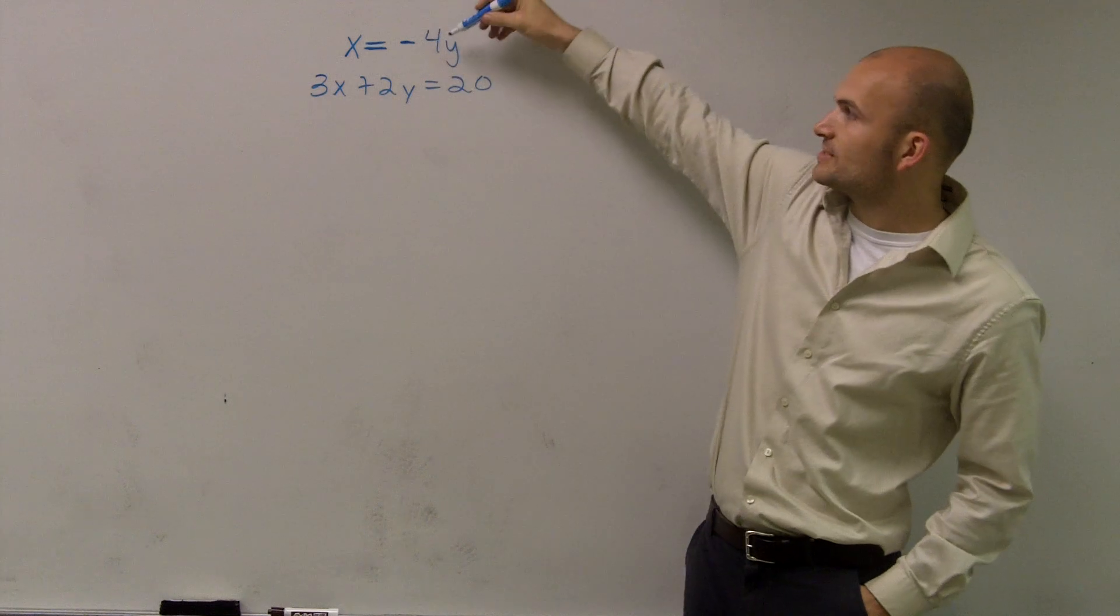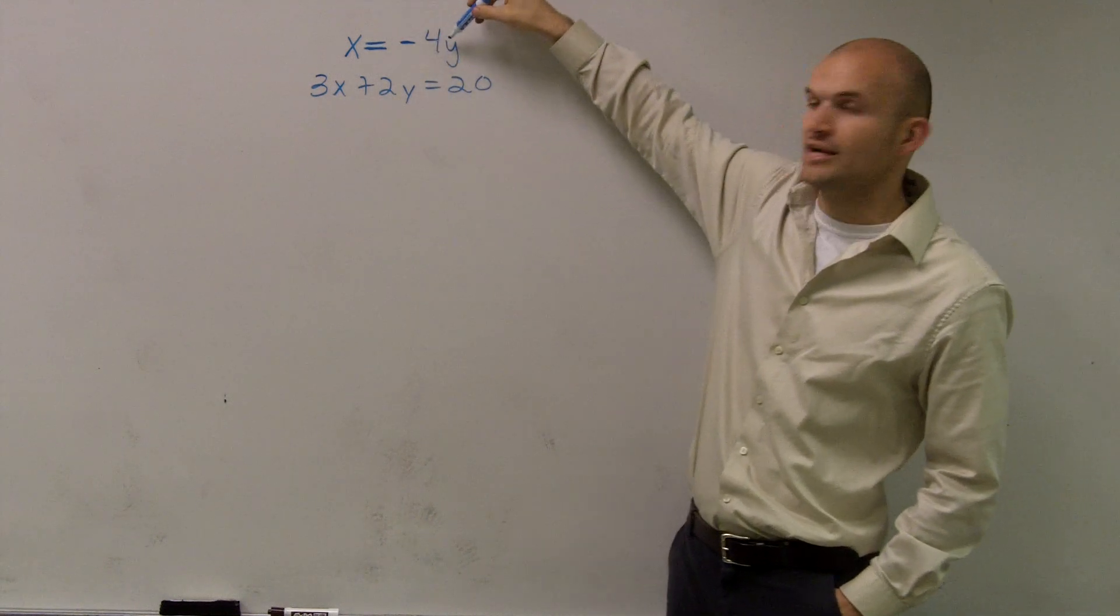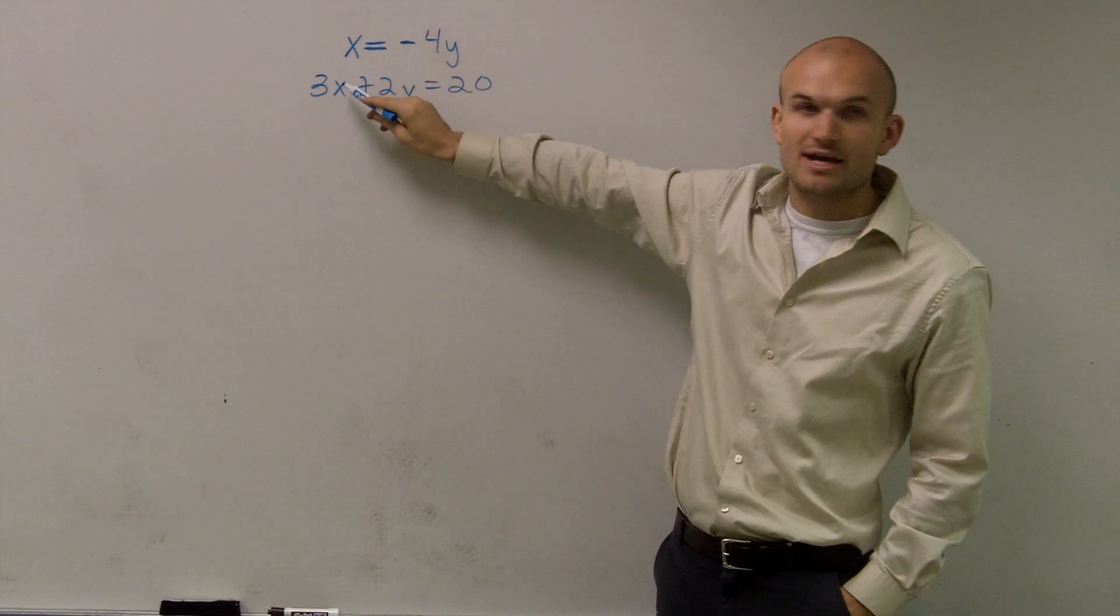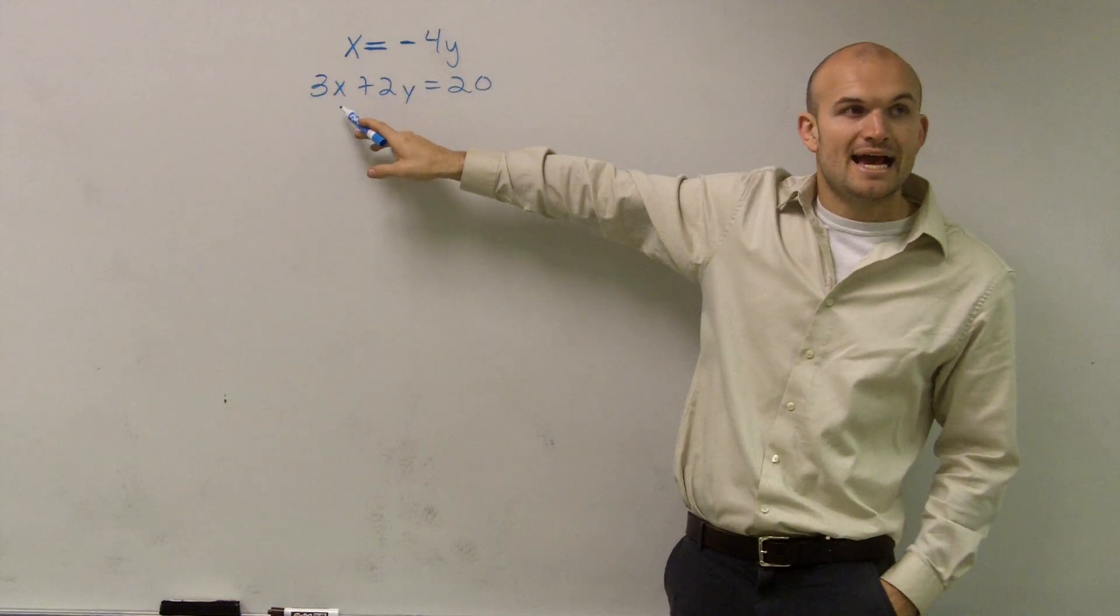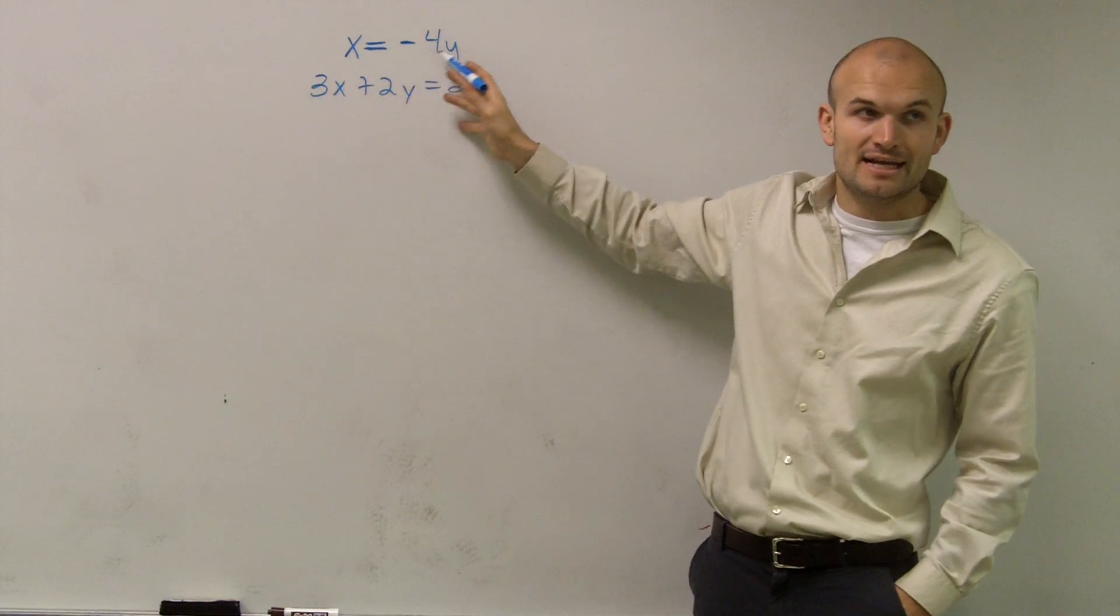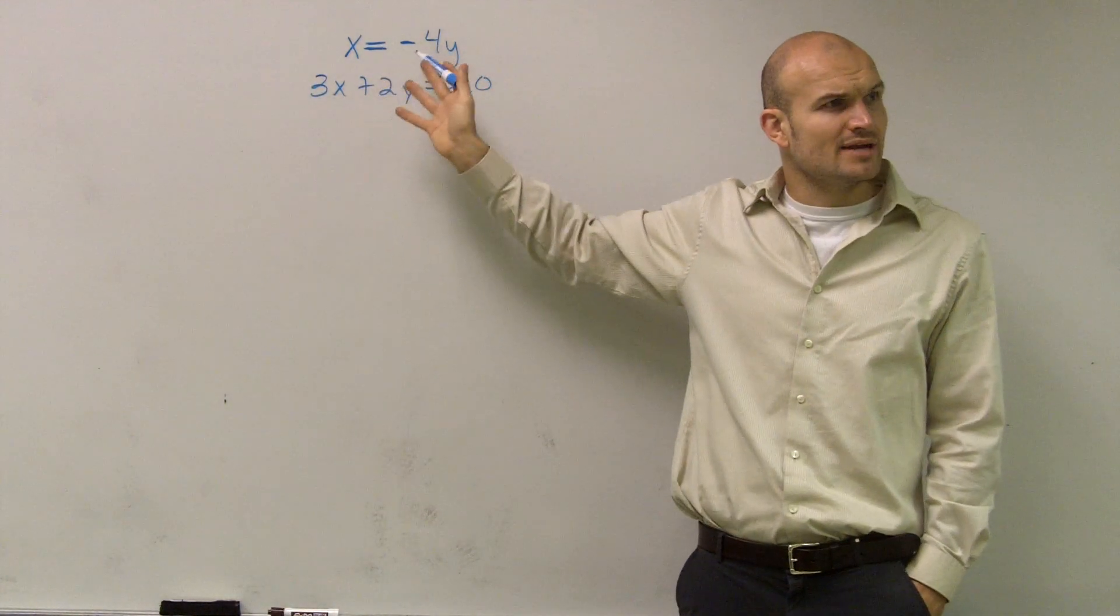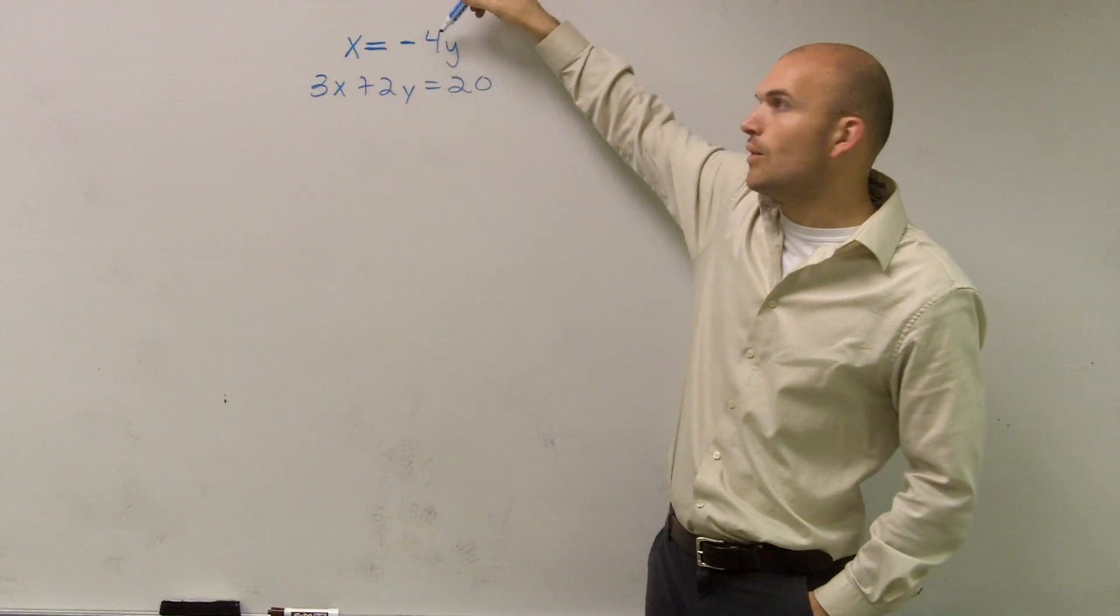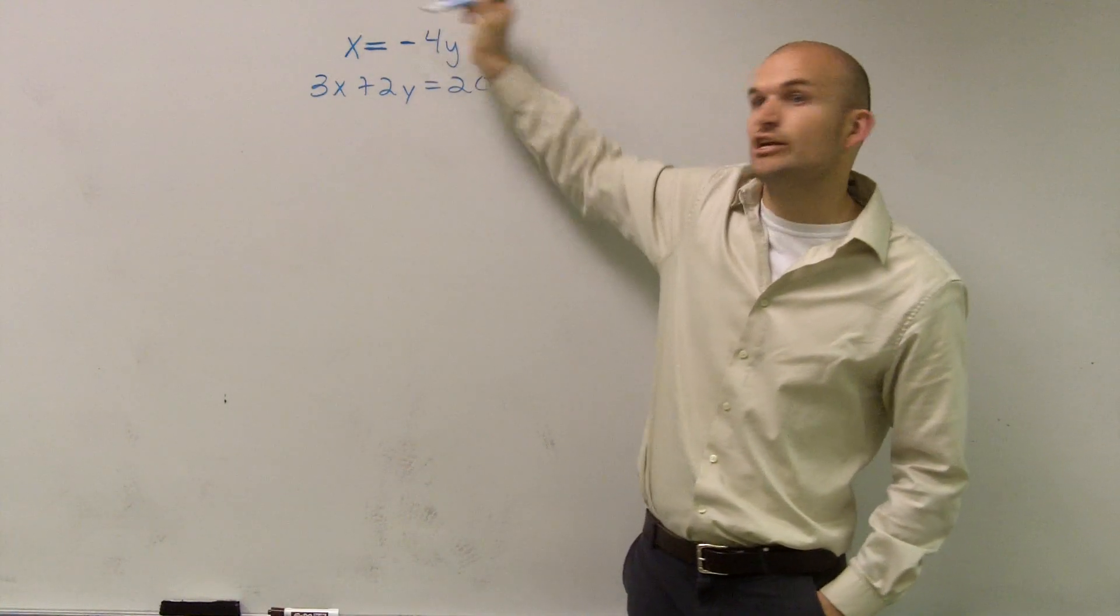So what they're saying is, if I say x equals negative 4y, on my next equation, rather than rewriting that, rather than using x, I can substitute in negative 4y. Why can I substitute negative 4y? Because negative 4y is equal to x, meaning they're equivalent.